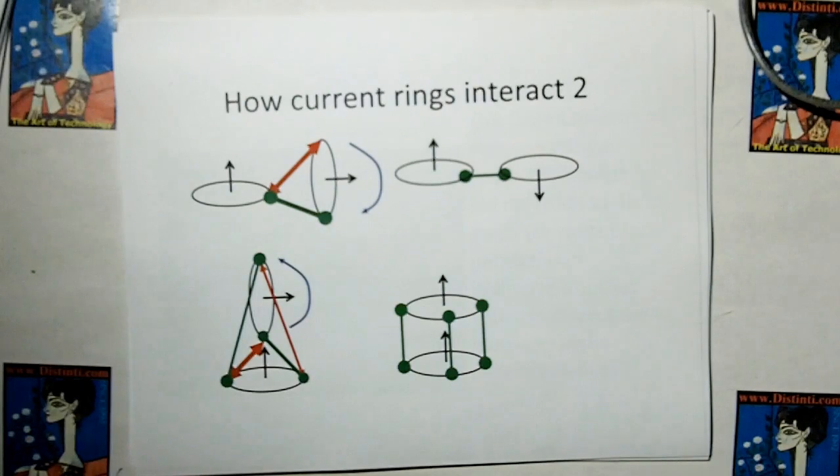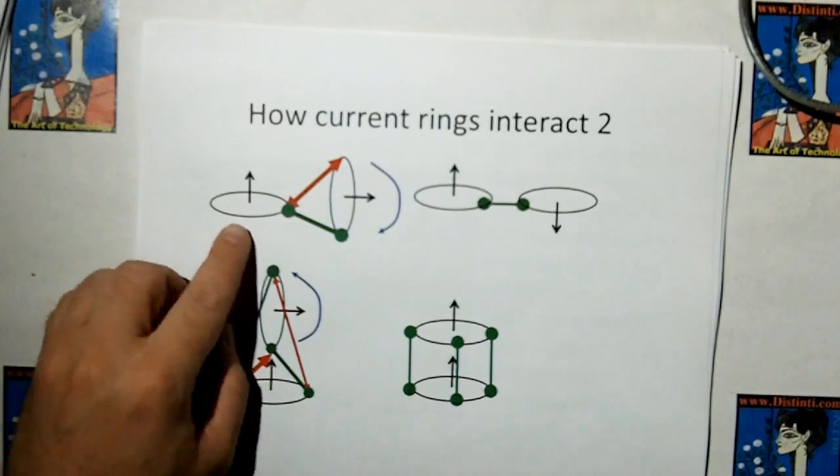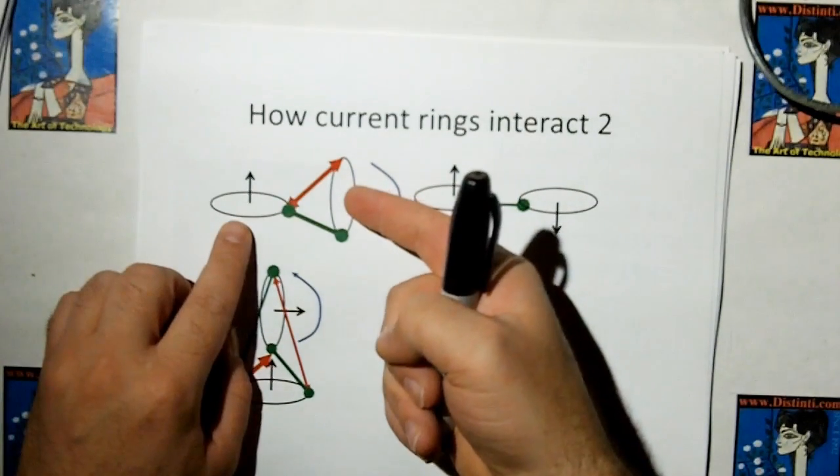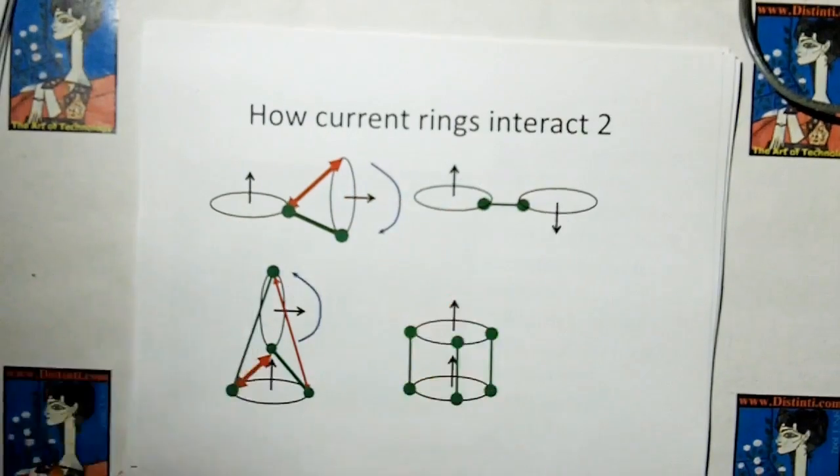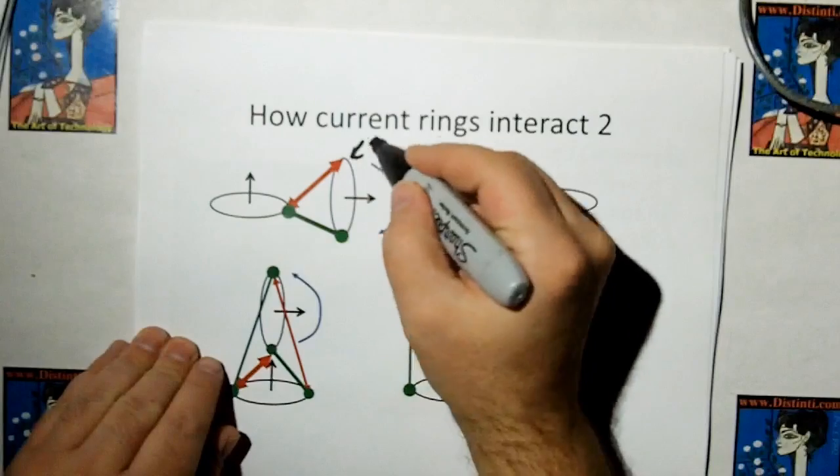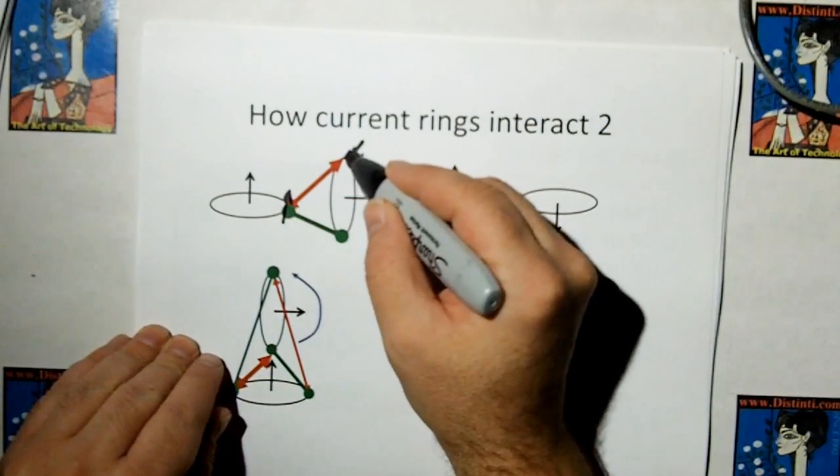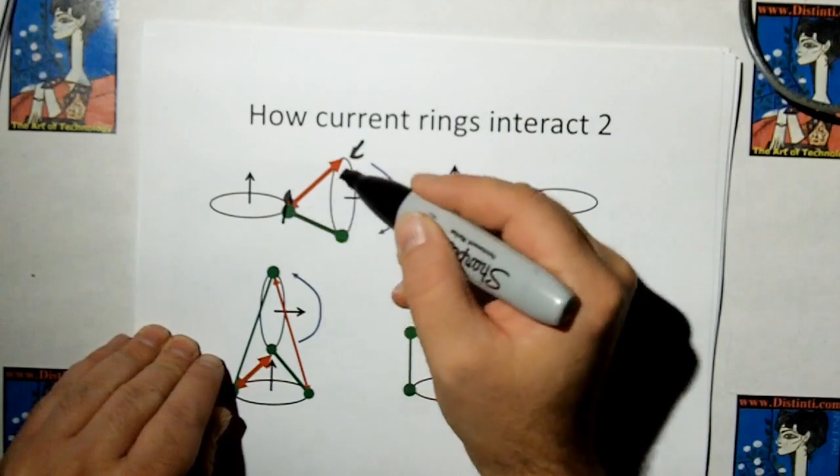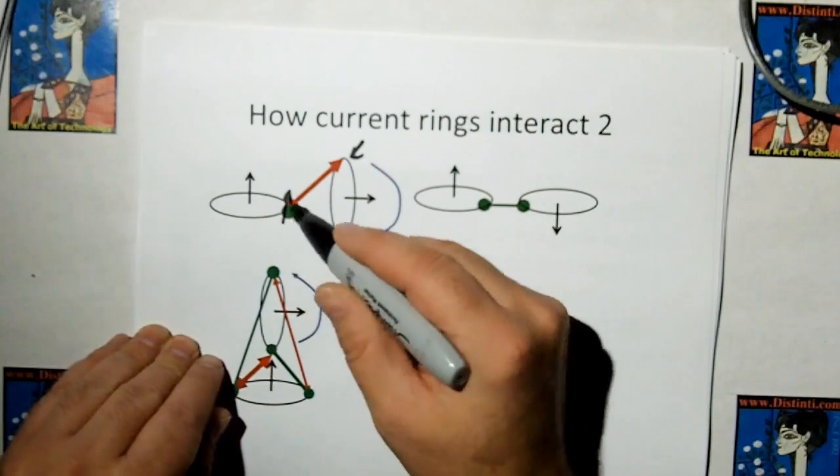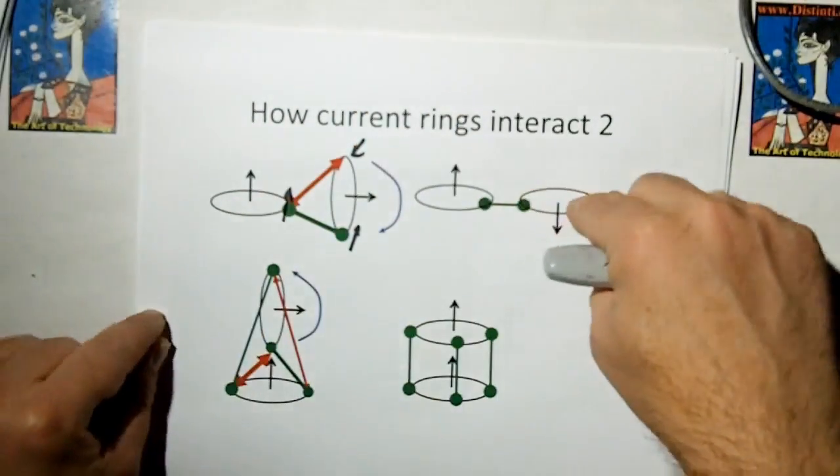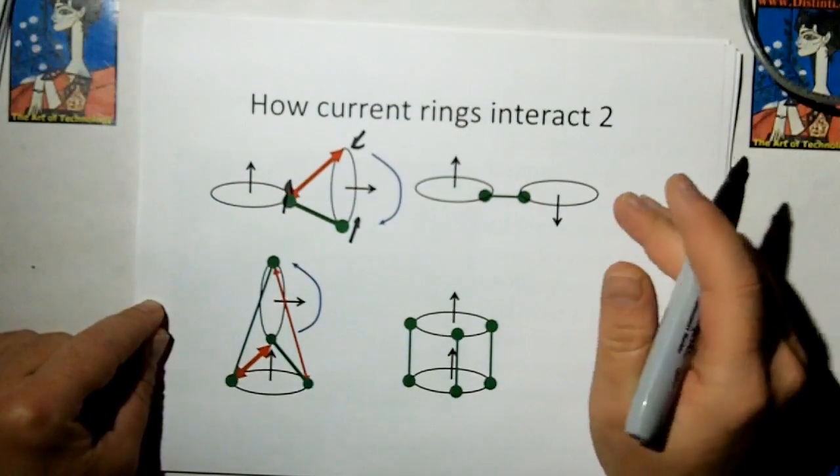But let's look at how if you had a current ring, another magnet that wasn't quite lined up, and let's say we had two current rings in these odd orientations here. Because the current is going out of the page here, but going into the page here, you're going to have a repulsion between the top of the ring and this part of the ring here. But because this part of the ring is going in the same direction as this, you're going to have attraction. So it's going to try to force that other current ring into this shape here, into this orientation here.